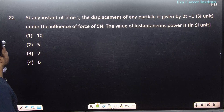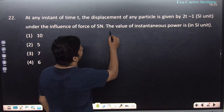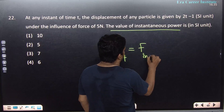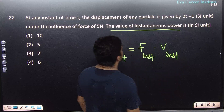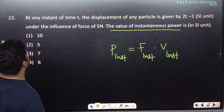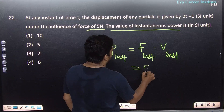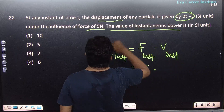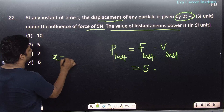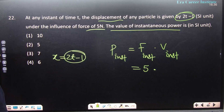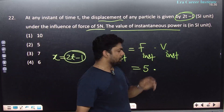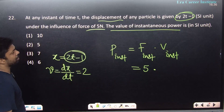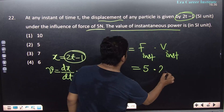Question 22: Instantaneous power = instantaneous force × instantaneous velocity. Force = 5 N (fixed). Position is given as x = 2t − 1, so velocity v = dx/dt = 2 m/s. Therefore instantaneous power = F × v = 5 × 2 = 10 W.